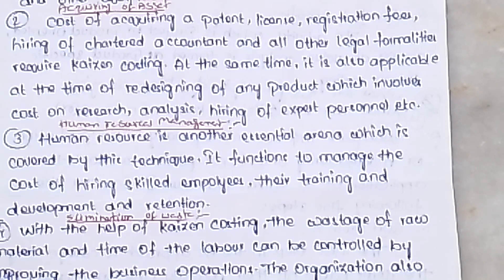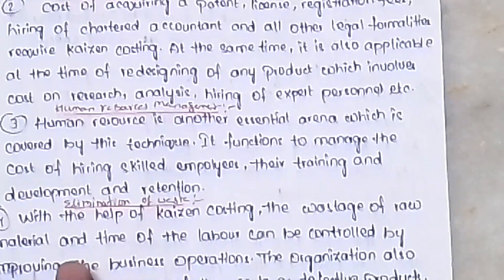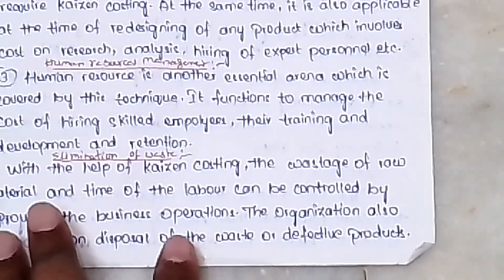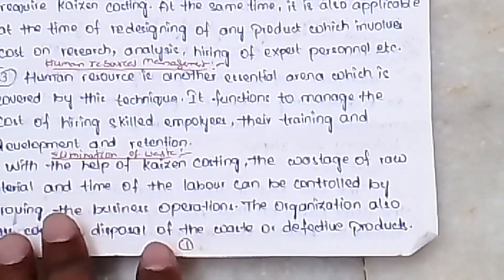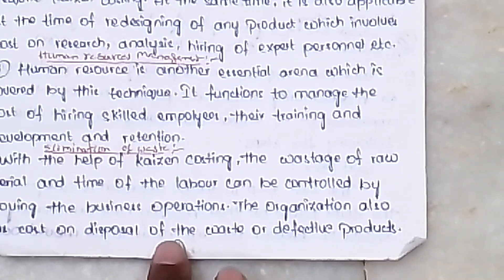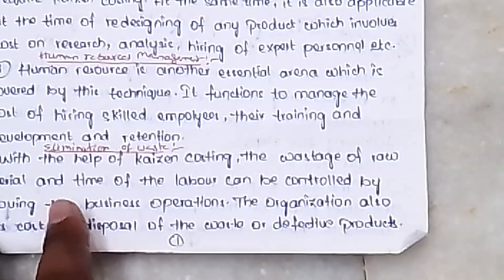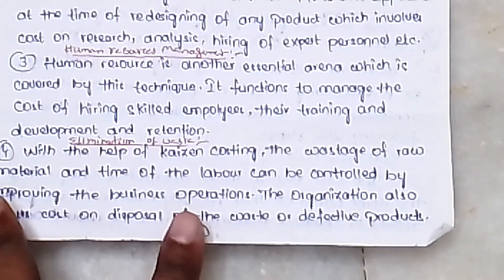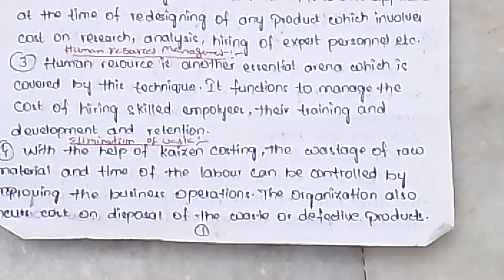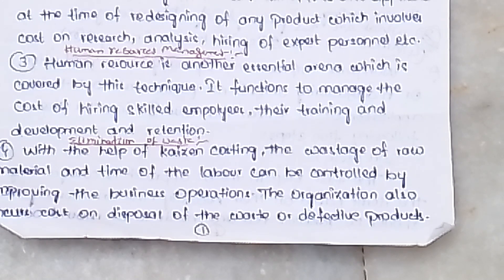The next point is the elimination of wastage. With the help of Kaizen Costing, the wastage of raw material and labor time can be controlled by improving the business operations.